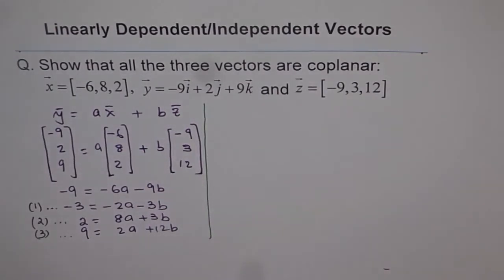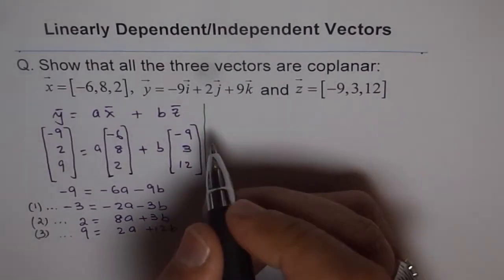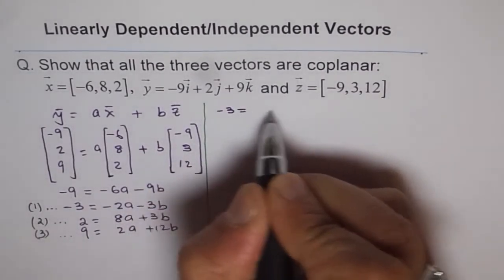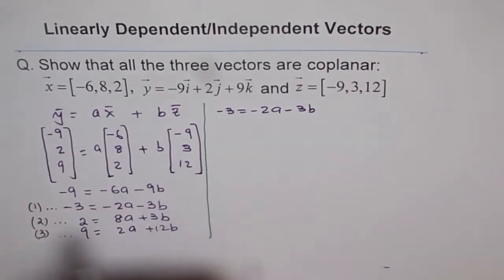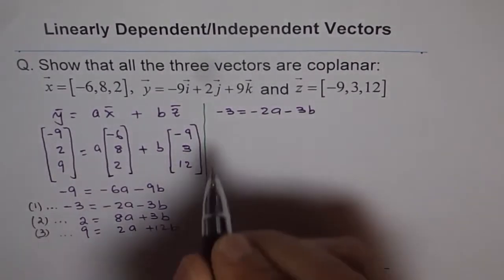Let me do it on this side. So we have here equation 1 is minus 3 equals to minus 2a minus 3b. That is equation 1.